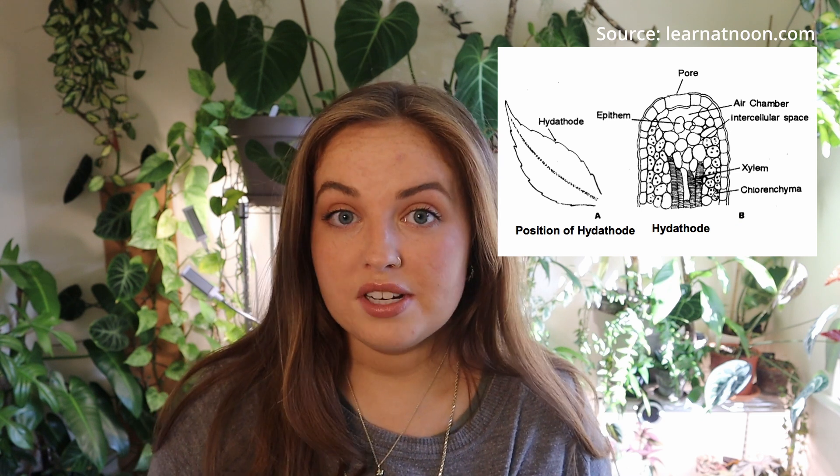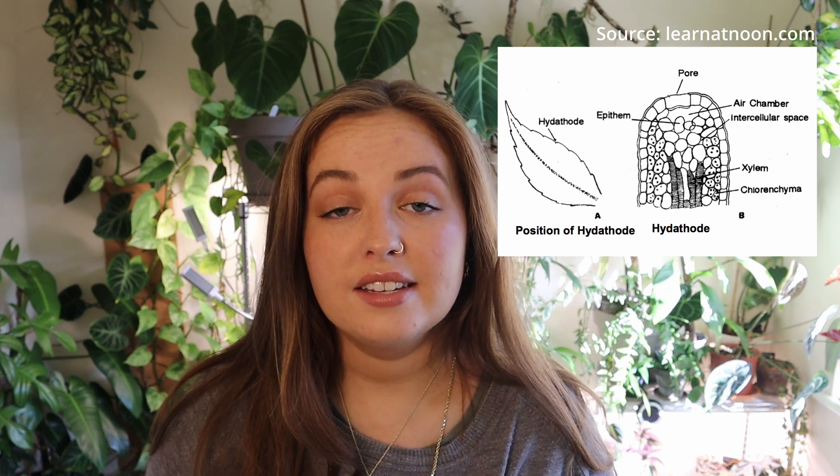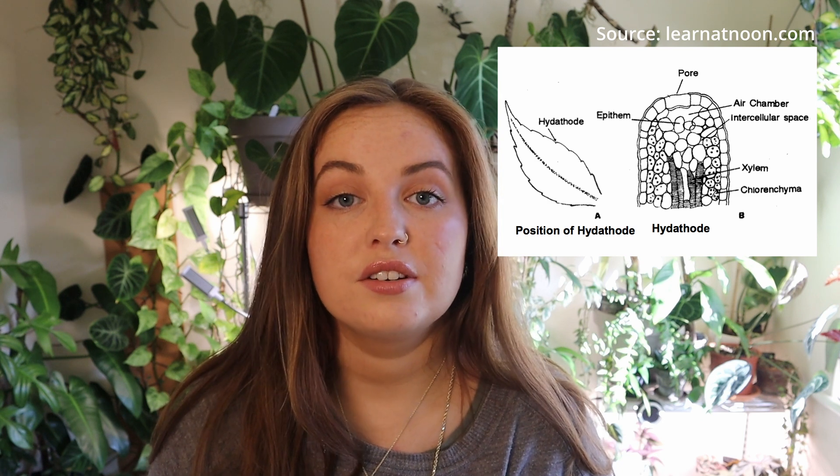Gutation actually happens through structures called hydathodes, which are essentially pores in the epidermis layer of a plant, and these are not present in all plants — only in certain types. It is very common in aquatic plants that are constantly submerged, which makes sense since they are in water all the time and need to release pressure so plant cells don't burst and become damaged. The root pressure from osmosis pushes water through the plant cells and out through the hydathodes to release this pressure at night.